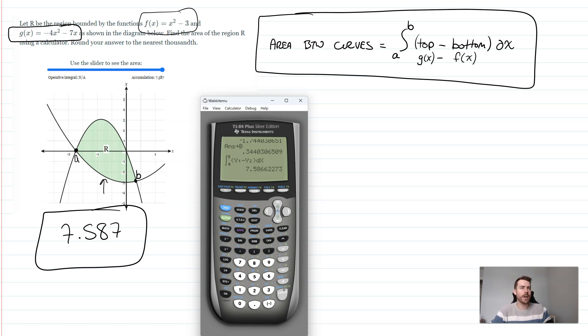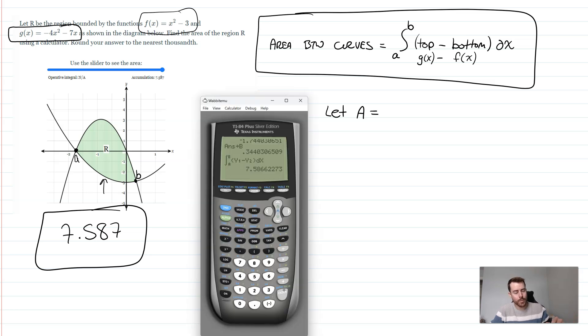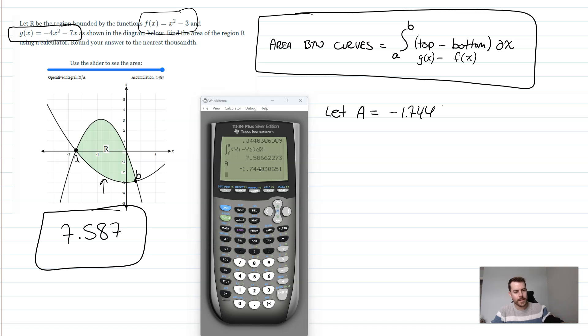If you are going to do this on the AP exam, just be a little bit careful. You need to write down the values at least once for A and B. So you could say, as long as you write down on your test, let A equal, and we wrote down the full value of A, which you can just copy down here, and you write down this full number. Negative 1.744030651.